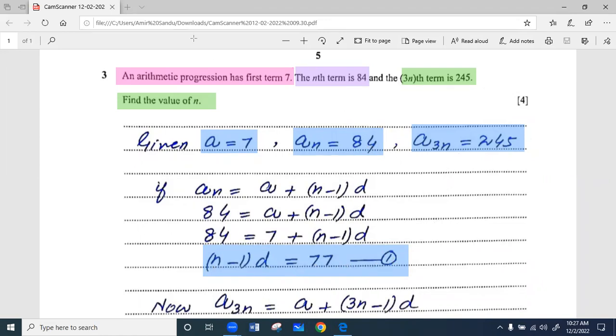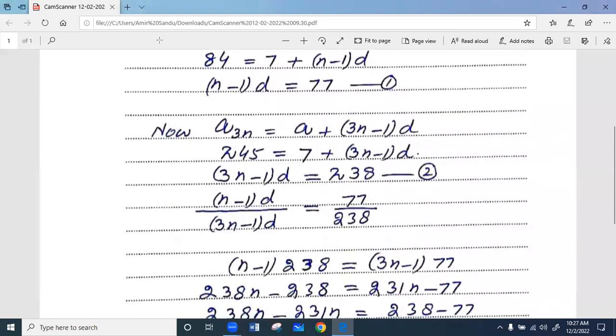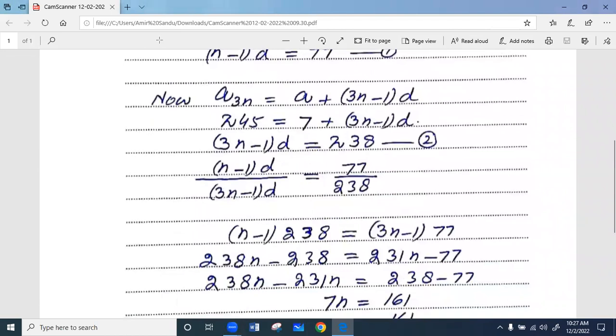अब हम a_3n equals 245 की information से एक दूसरी equation बनाएंगे. Because a_n equals a plus (n-1)d है, तो अब इसमें सिर्फ ये करेंगे कि n की जगह 3n apply कर देंगे.